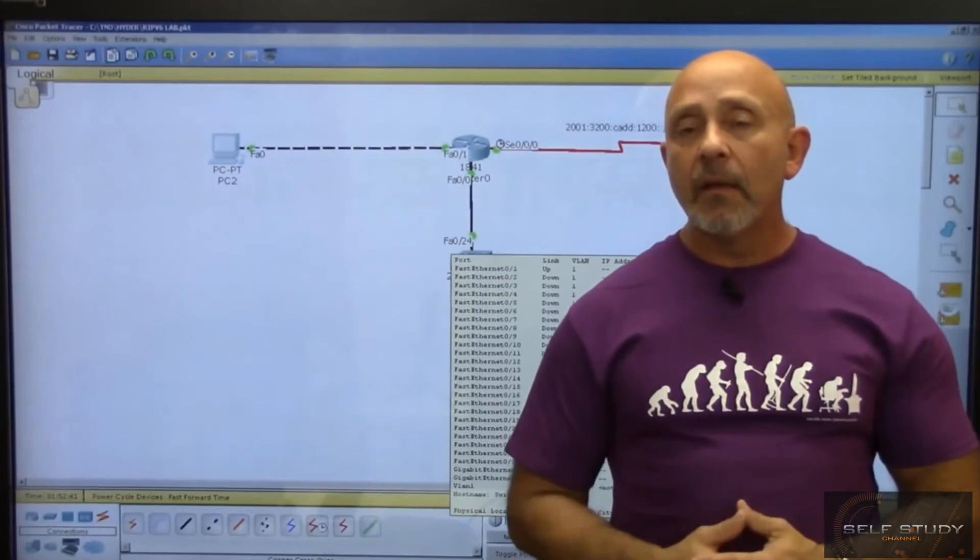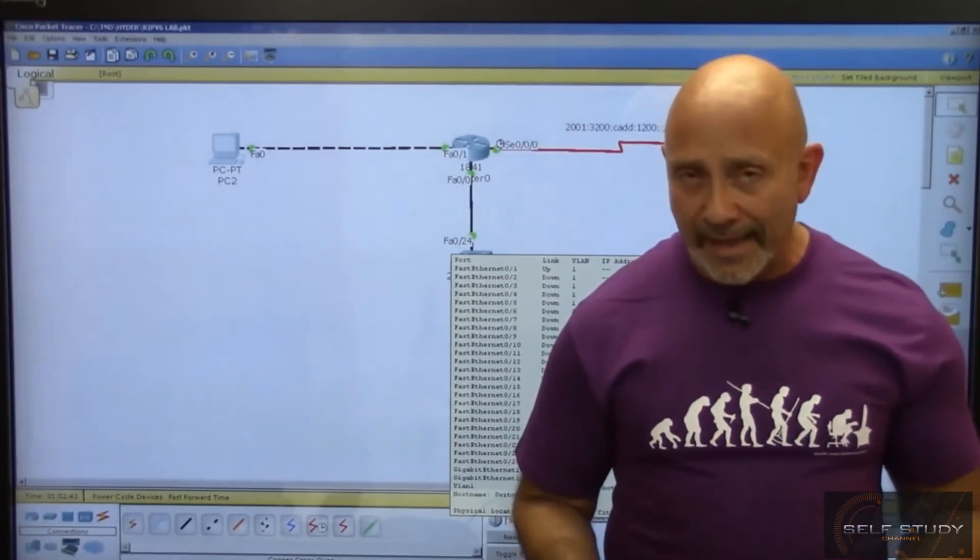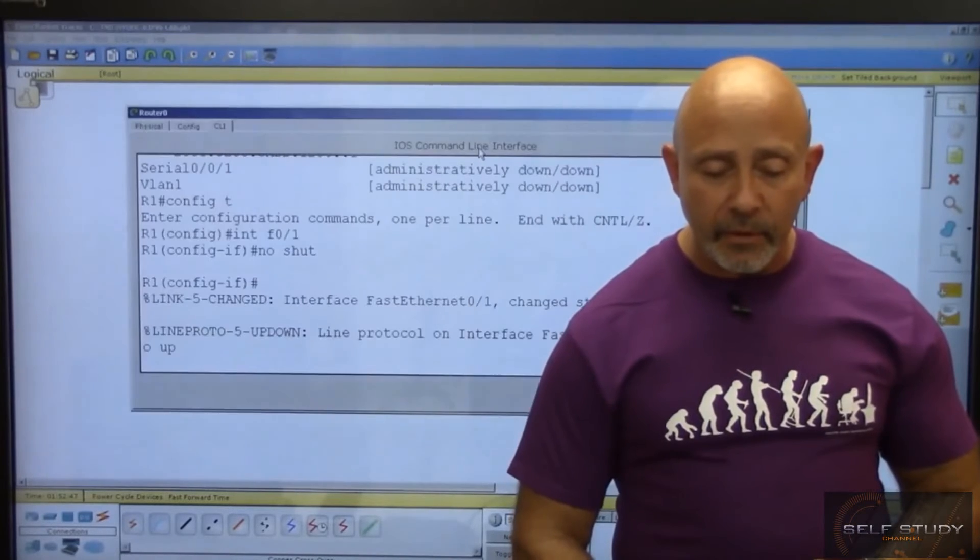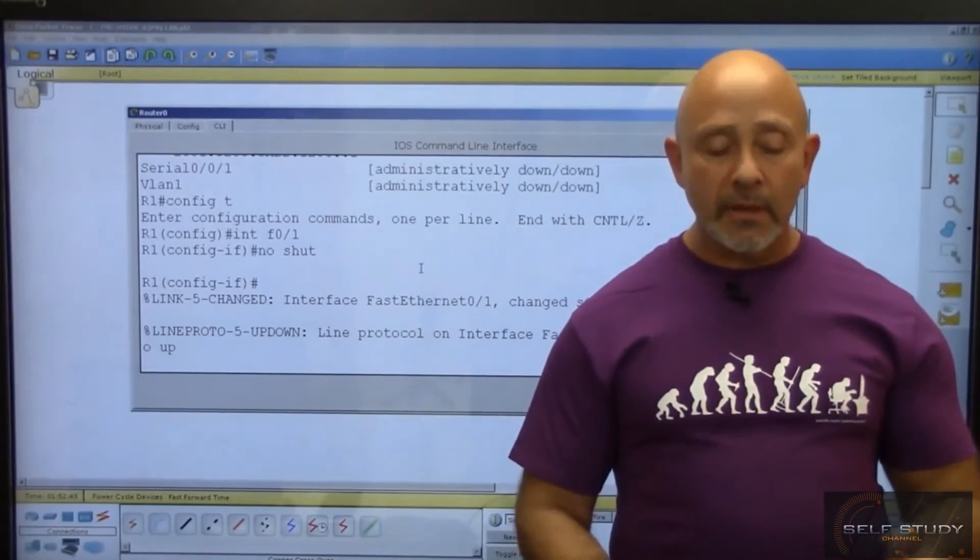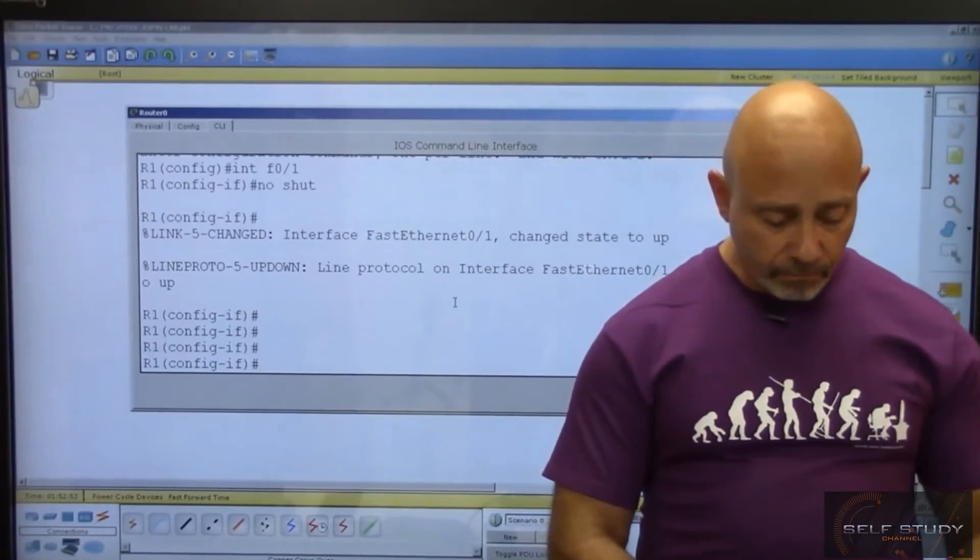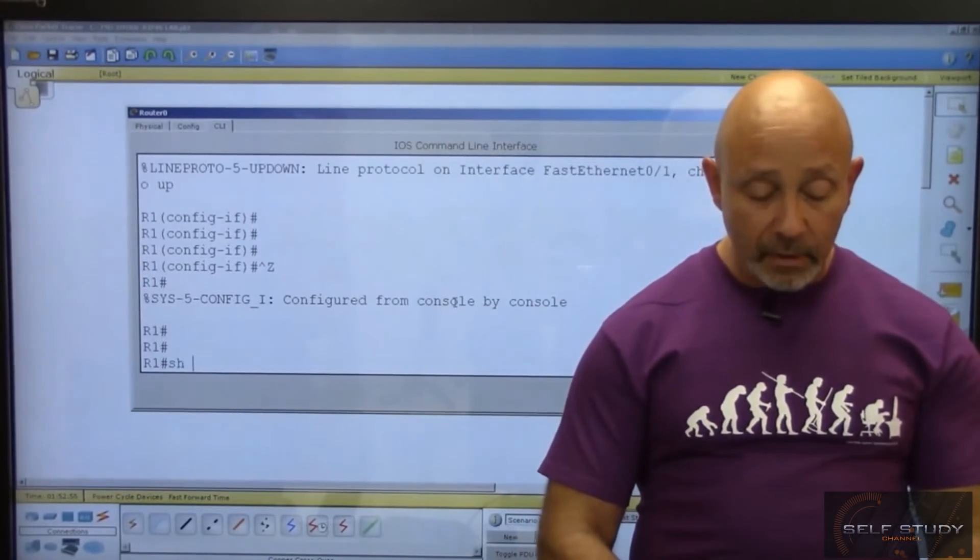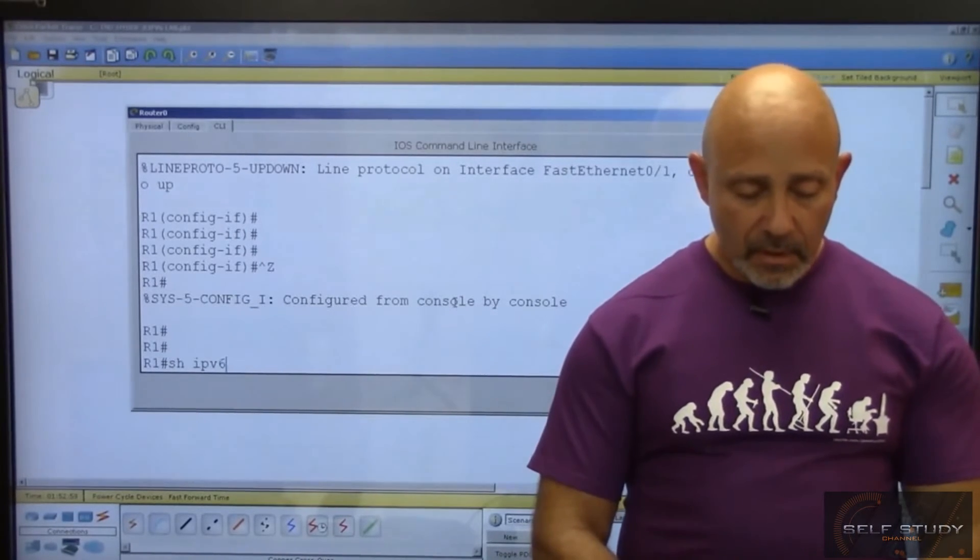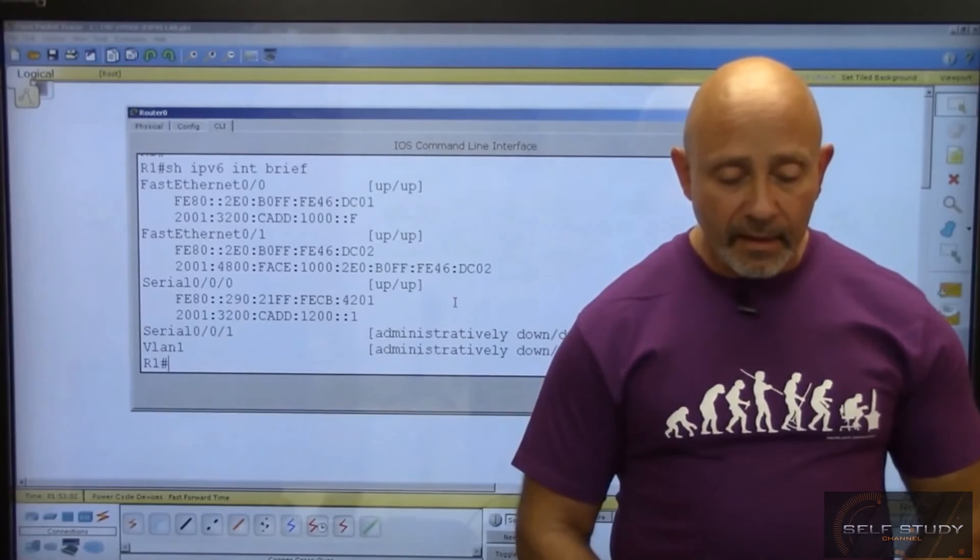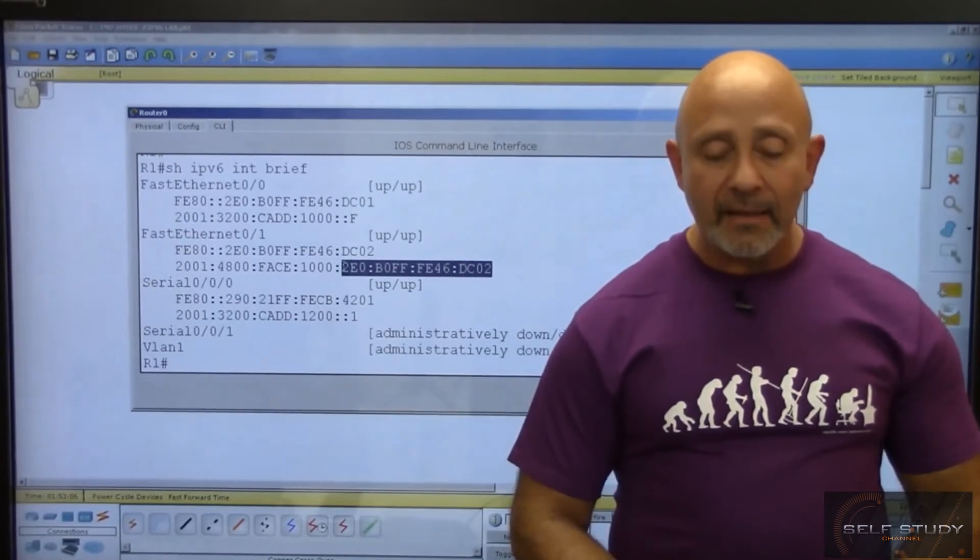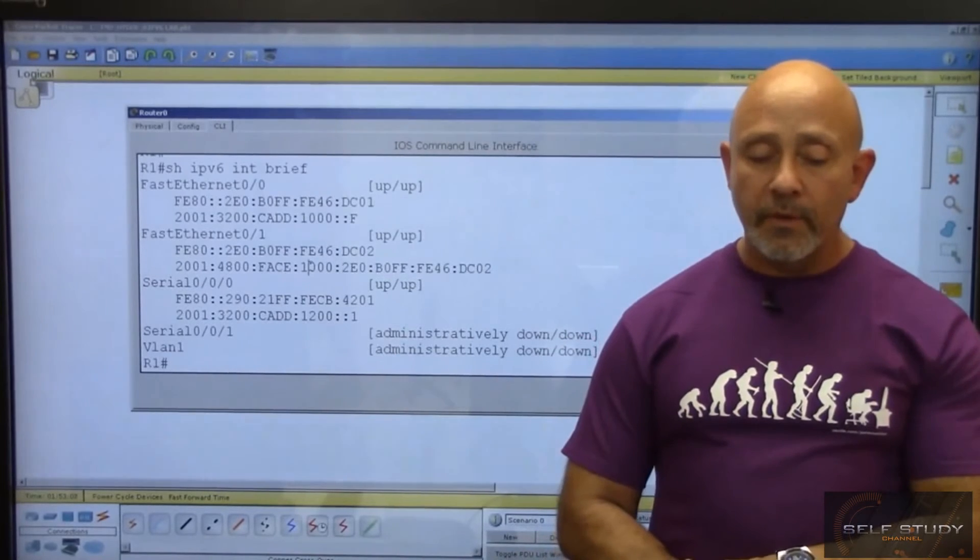Well, there it is, auto-configuration. It's not really that difficult to configure. Let me show you so we can take a look at it again so you don't forget what it looks like. Show IPv6 int brief, I should have just done an up arrow. And there it actually assigned that particular portion of the address dynamically because of auto-configuration.